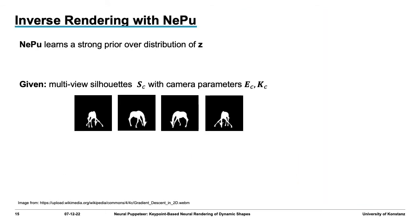In our inverse rendering experiments, we aim to infer 3D keypoint positions from multiple silhouettes. Since our end goal is easy domain transfer from synthetic to real, we only rely on 2D occupancy masks as observations, which makes our 3D keypoint detector invariant to texture and illumination changes. To solve this highly complex inverse rendering problem, we heavily rely on the prior distribution that Nepu learned over the relations of 2D image properties and 3D keypoints.